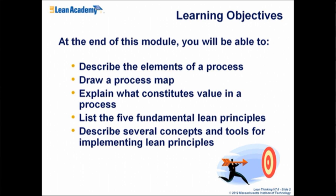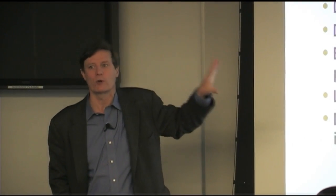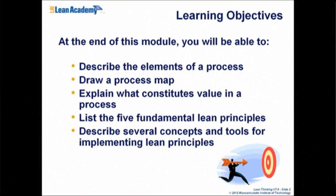What we're going to do first is talk about processes. If lean thinking has one really important component — if you walk away from here with one idea in your head — it's to think about work as a process which can be improved. We're going to spend time thinking about what a process is, how we map processes, how we create visual representations of them, and how we think about value in that context. We'll look at the fundamental lean principles of Womack and Jones: essentially how we can think about improving a process in an organized way.